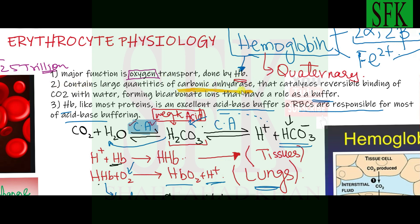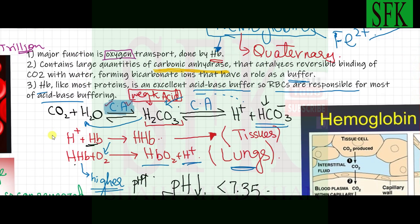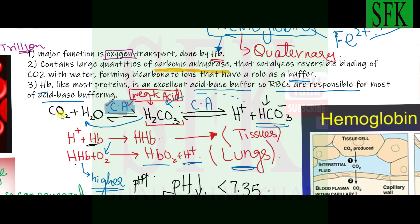Red blood cells contain large quantities of a special enzyme called carbonic anhydrase, which catalyzes the reversible binding of carbon dioxide with water. Carbon dioxide released from actively respiring tissues enters the red blood cells and must be transported all the way to the lungs. The red blood cells play a key role in this carbon dioxide transportation.